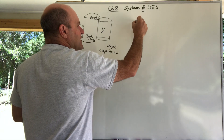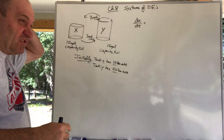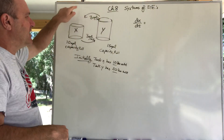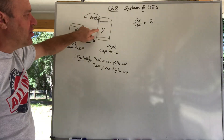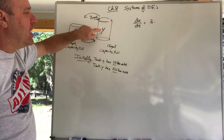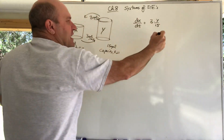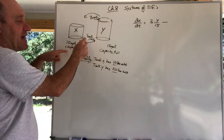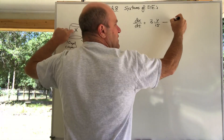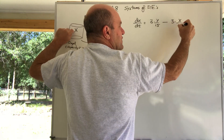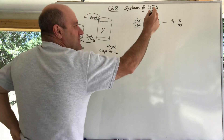This is not all that difficult. I can talk about dX/dt — what's happening to tank X. We usually start with what's coming into tank X. What's coming into tank X is 3 gallons a minute of a concentration of an unknown amount Y over 15 gallons of water — Y over 15. What's leaving tank X is 3 gallons a minute of an unknown concentration X over 10. That's how we used to do these problems, except we didn't have 2 unknowns.